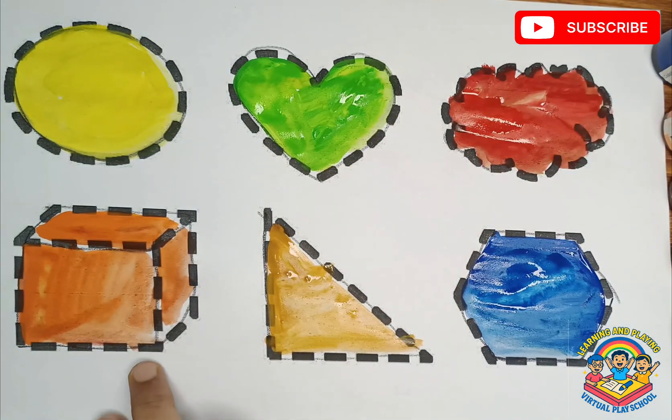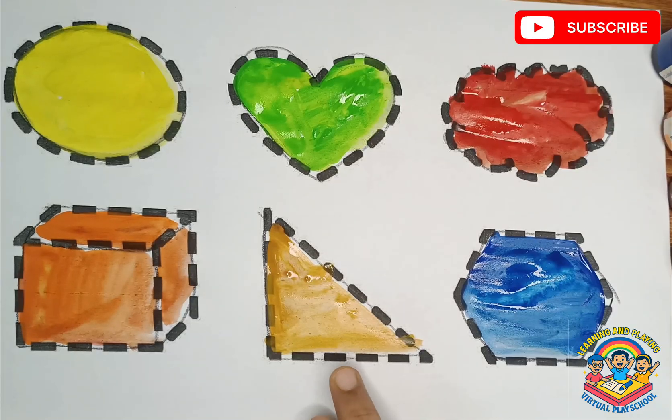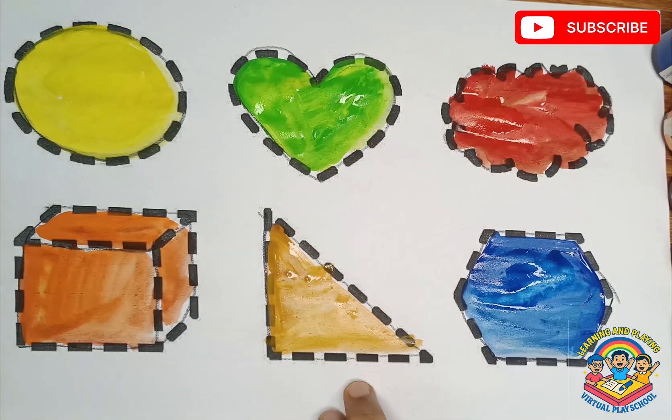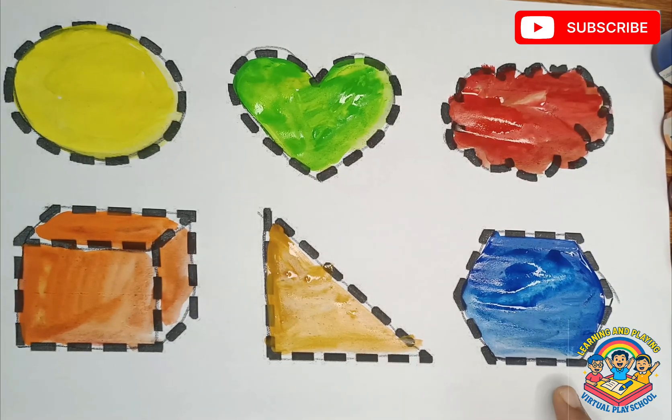What is this kids? This is cube. Triangle, what is this kids? This is triangle. This is hexagon.